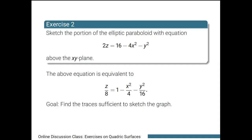In this exercise, we want to sketch the portion above the xy-plane of the elliptic paraboloid with equation 2z equals 16 minus 4x squared minus y squared. Notice that when we divide both sides by 16 in the given equation, we get z over 8 equals 1 minus x squared over 4 minus y squared over 16.